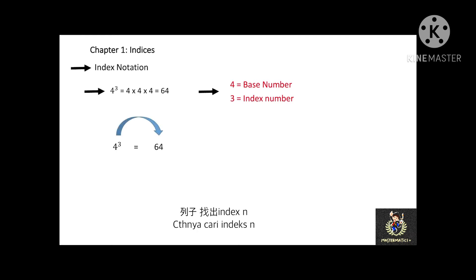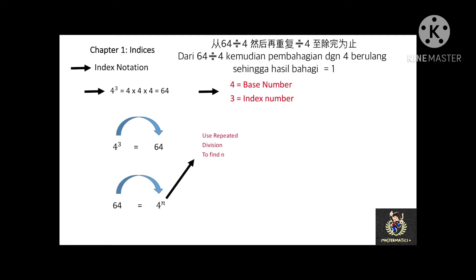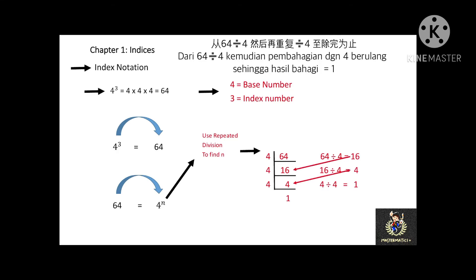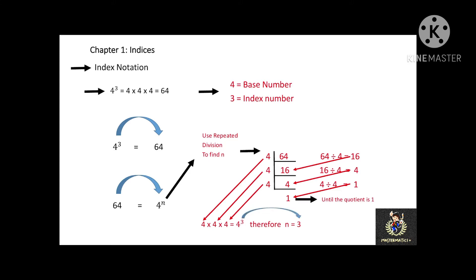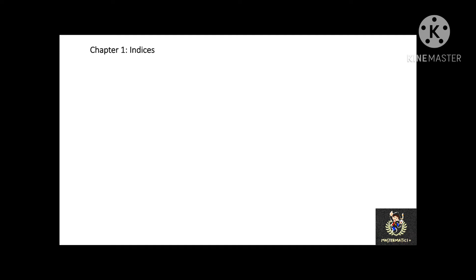To find the index number, we can calculate using the method of repeated division. To find the index notation, first we divide 64 by 4 to get 16, then divide 16 by 4 again to get 4, and divide 4 by 4 to get 1. We do repeated division until the coefficient equals 1. We divided by 4 a total of 3 times, so the index number is 3. Therefore 64 equals 4 to the power of 3.